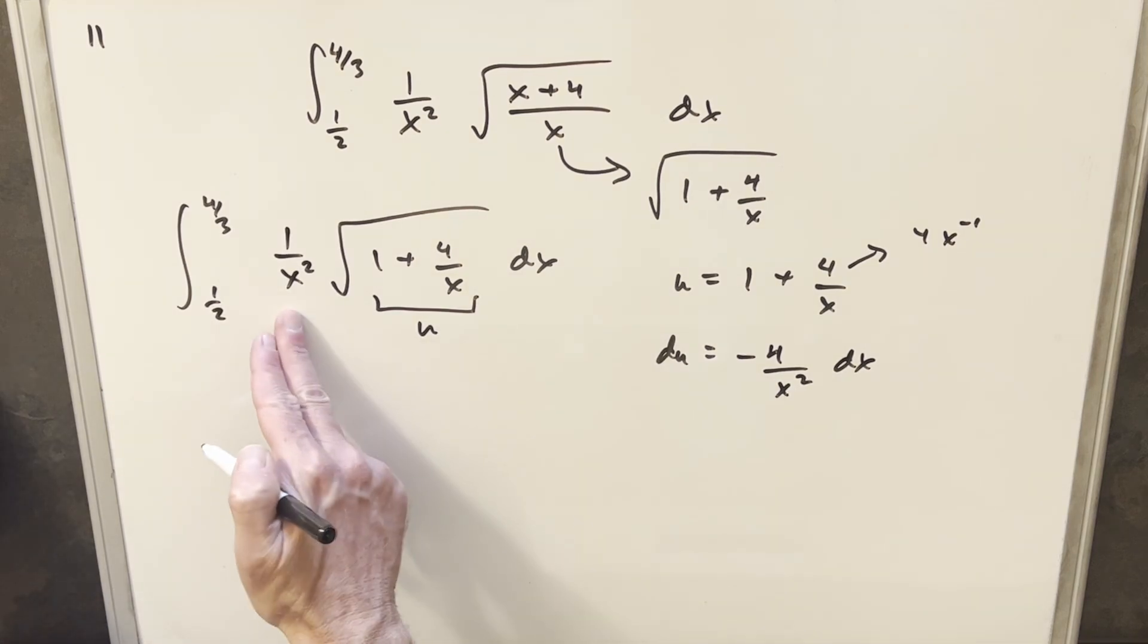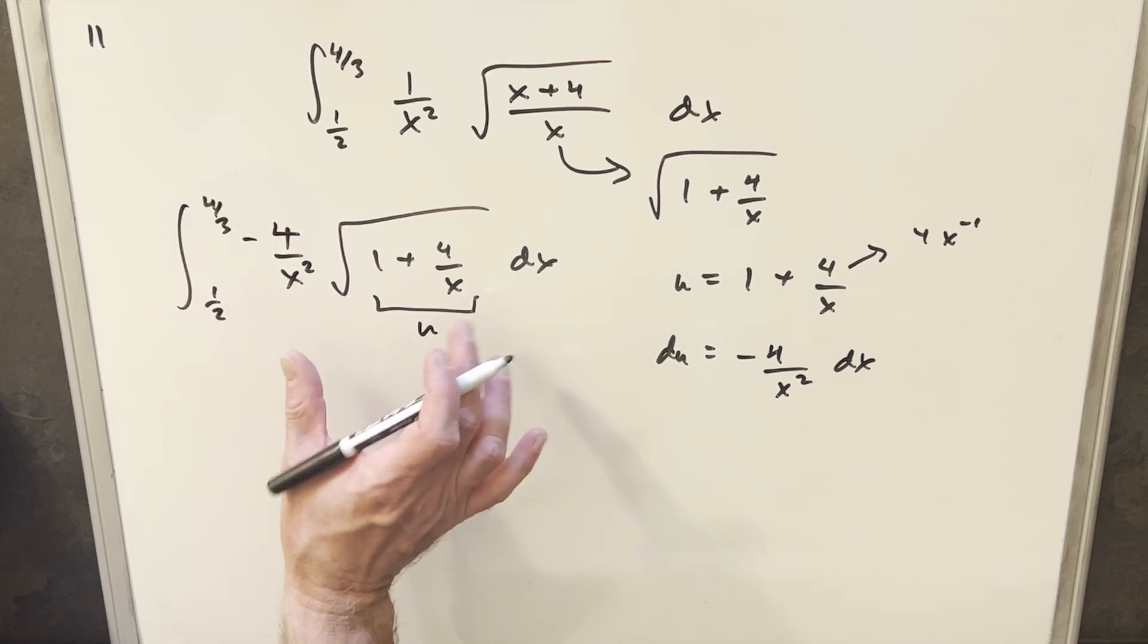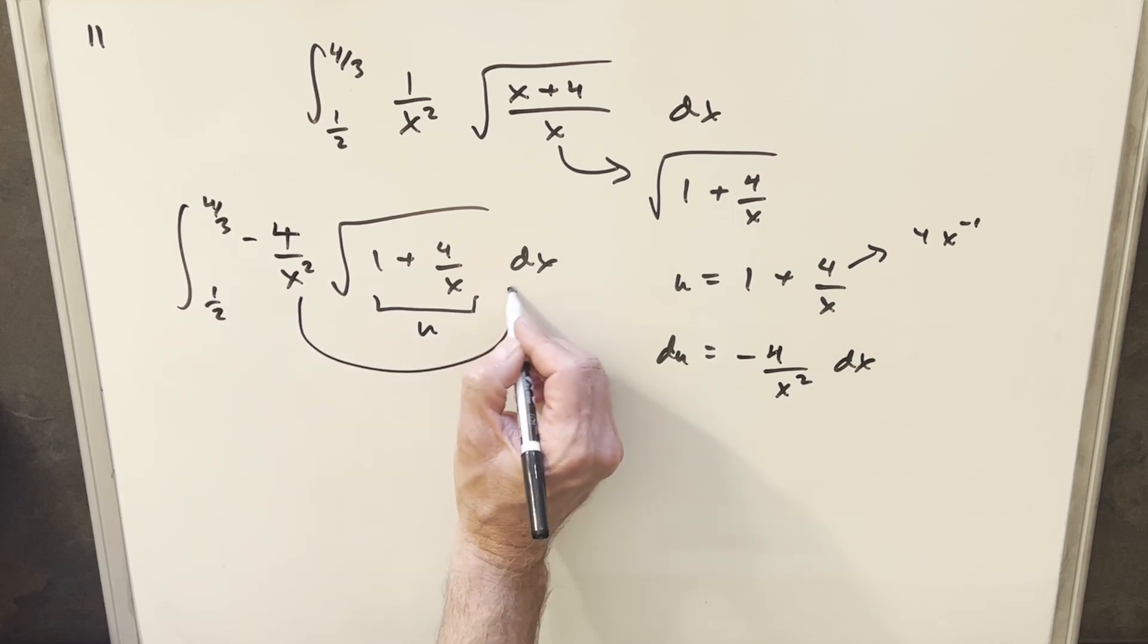The nice thing here is we have our x squared. We can create that minus 4 to have this be exact. So if I write this as minus 4 over x squared, then we have our du exactly right here with this dx.